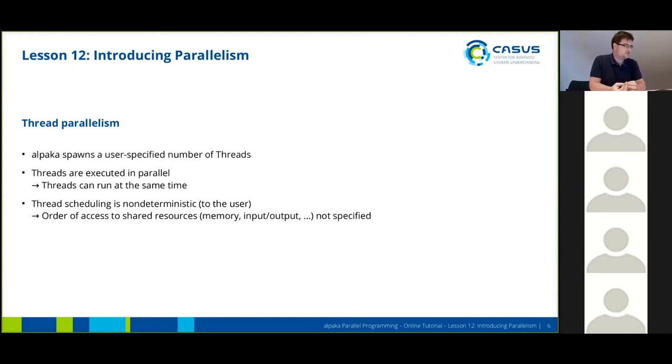All you need to know now is that Alpaca spawns a user-specified number of threads. In our case, we have specified that there are eight threads to run in parallel, and this is what's happening here. Executing in parallel means that the threads can run at the same time, and they probably do run at the same time as well.